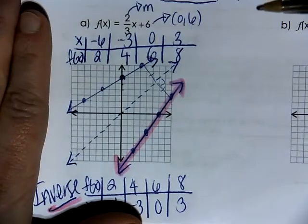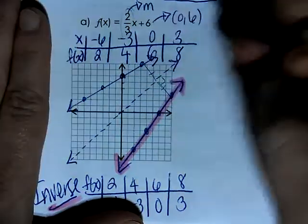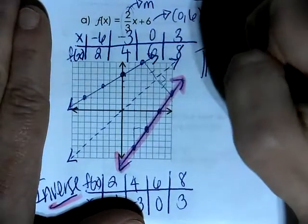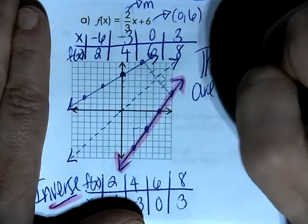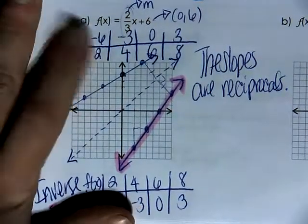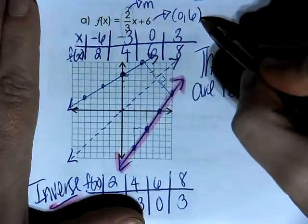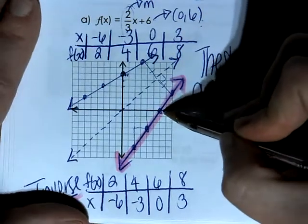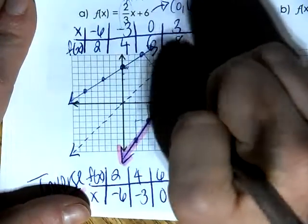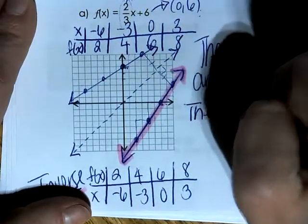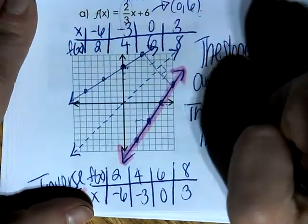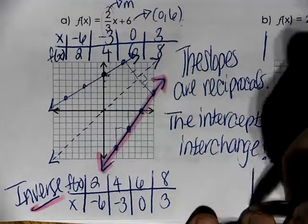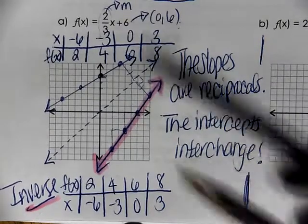There are some cool characteristics to notice here. Our original slope was two-thirds — check out the inverse slope: it's rise three, run two, so the slopes are reciprocals of each other. Also notice the intercepts: the y-intercept started at zero, six; the x-intercept of the inverse is at six, zero. So the intercepts interchange — which makes sense because the x and y values interchanged. These are interesting characteristics of the inverses of linear functions.